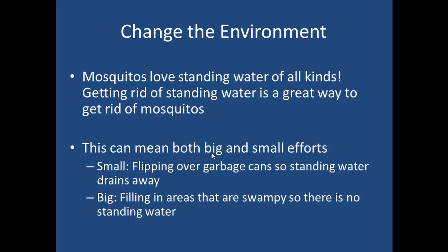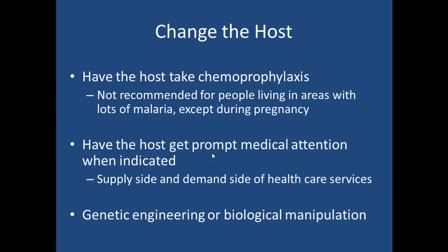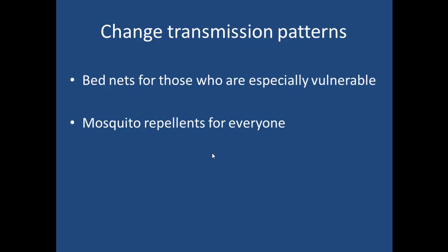You can also change the host. You can take prophylaxis — there are a lot of anti-malarial prophylactic drugs available, especially during high-risk periods like early childhood or during pregnancy. You can have people get prompt medical evaluations as soon as the earliest signs show up. Genetic engineering or biological manipulation — more like the idea of vaccine development — would be an example. You can also change transmission patterns: using bed nets is one of the best ways, especially for those who are susceptible. If you're sleeping under a bed net during the evening, mosquitoes are unlikely to bite; also mosquito repellent and mosquito traps in the environment.